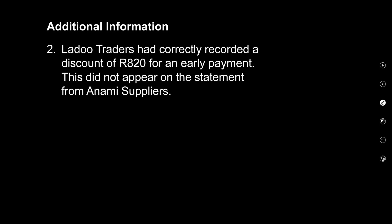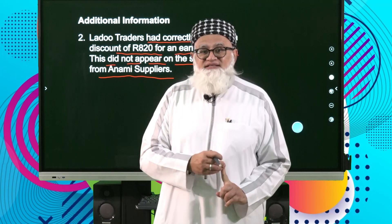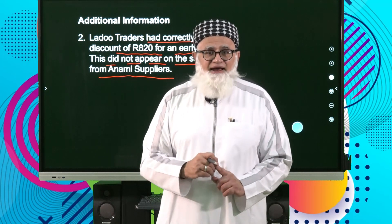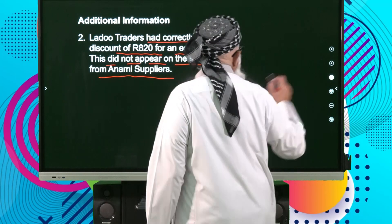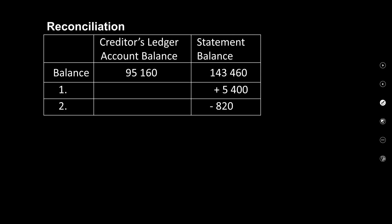Discrepancy two: Ledger traders correctly recorded a discount of 820 for an early payment, but this did not appear on the statement from Anami suppliers. We correctly recorded the discount in our books; the error is in the statement. We subtract 820 from the statement, reducing the amount due to them by the discount they omitted to deduct.